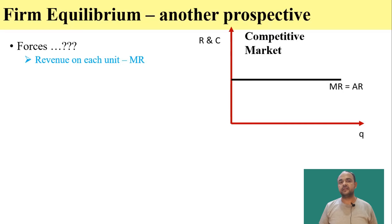So here you can see in the competitive market marginal revenue and average revenue are represented by horizontal straight line. Marginal cost is an upward sloping curve. Here, if the firm produces, say at this point, the dotted line shows the profit that firm earns from this particular unit.